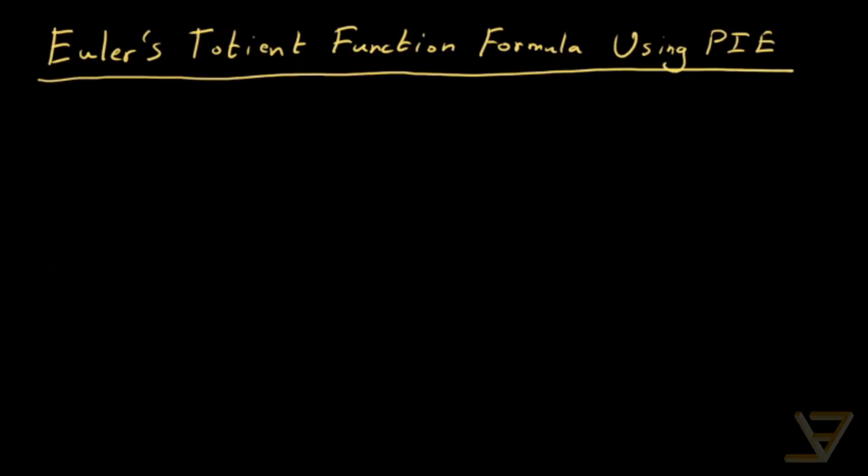Hi everyone, what we're going to be doing today is deriving a formula for Euler's Totient function using the principle of inclusion-exclusion from combinatorics. So that's quite a mouthful, let's dive right into it.